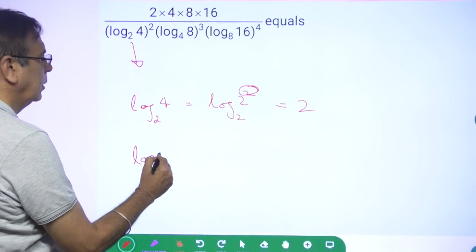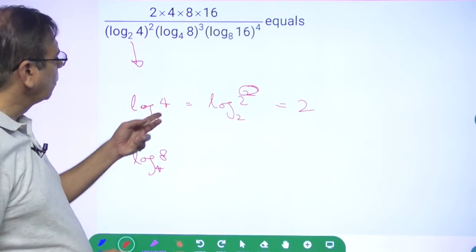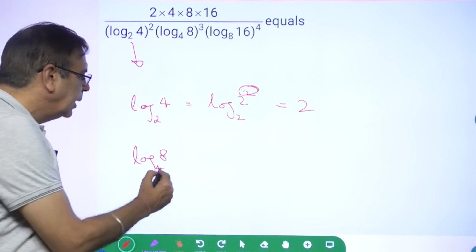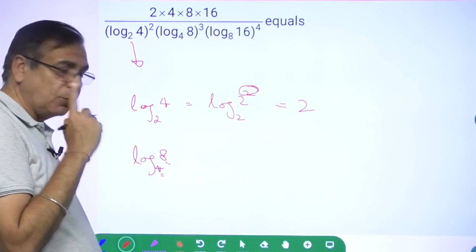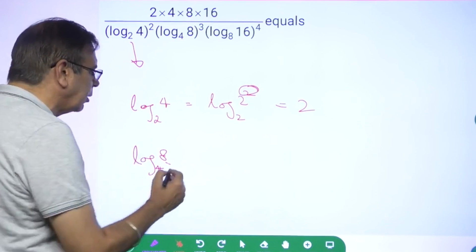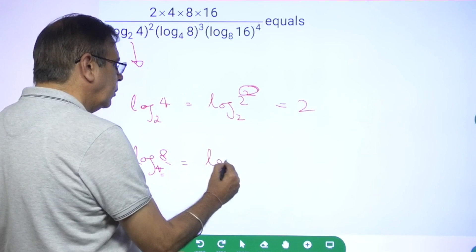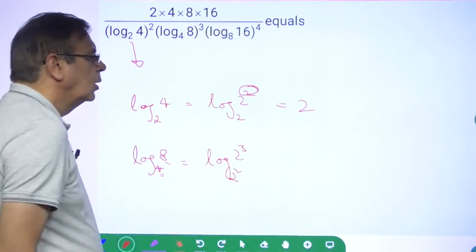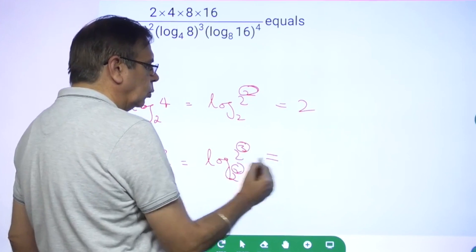Log of 8 base 4. Obviously 4 was a power of 2 so it was easy, but here 8 is not the power of 4. So what should you do? Write both of them in terms of power of 2. Log of 2 cube on 2 square. What will this be? This will be 3 divided by 2.